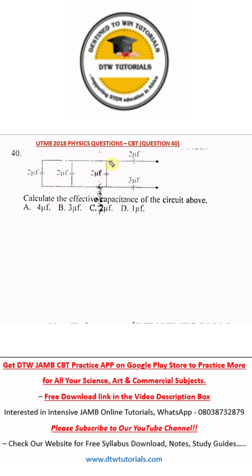Question 40 of the UTME 2018 physics past question, that's your JAMB 2018 physics exam, says calculate the effective capacitance of the circuit above. So we're looking at this circuit. Let us simplify this. The first thing we should do is try to resolve the ones in parallel. So let's split this circuit into two now.